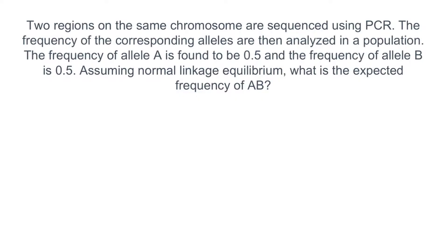Two regions on the same chromosome are sequenced using PCR. The frequency of the corresponding alleles are then analyzed in a population. The frequency of allele A is found to be 0.5, and the frequency of allele B is 0.5. Assuming normal linkage equilibrium, what is the expected frequency of AB? From the question stem, we learn that allele A occurs half of the time and allele B occurs the other half. If these two alleles are in linkage equilibrium, we can assume the probability of them being inherited together is 0.25 — so 0.5 times 0.5 equals 0.25.